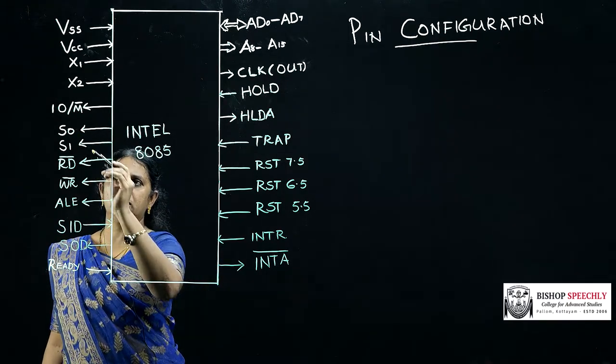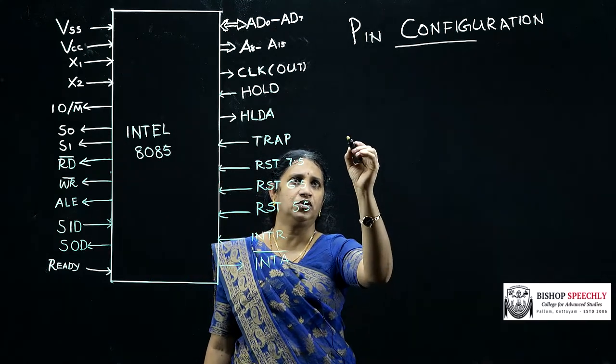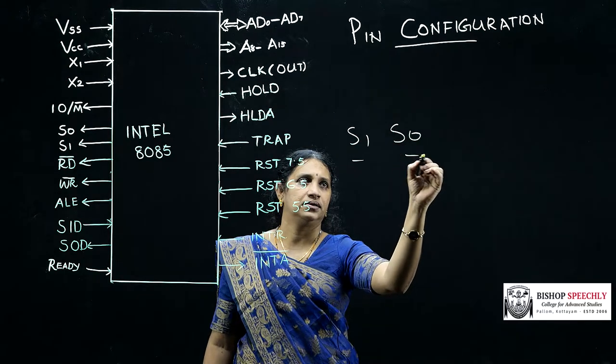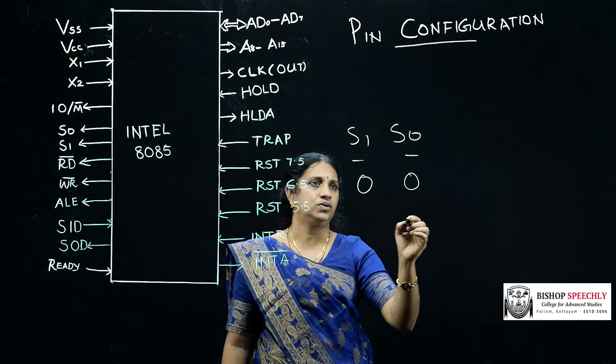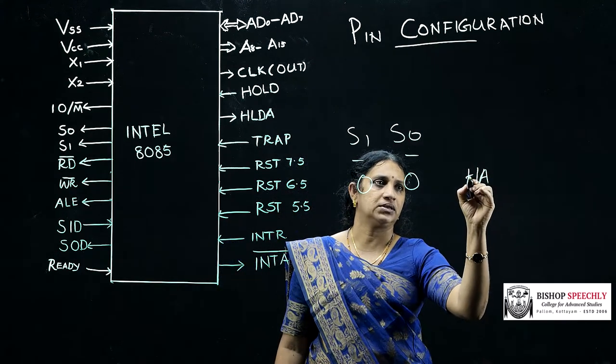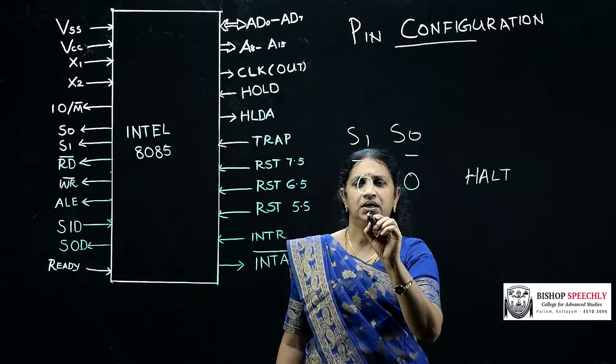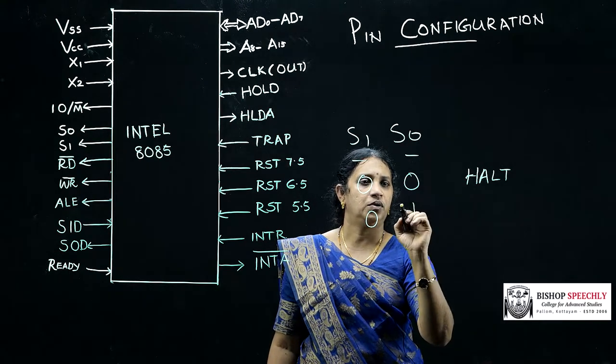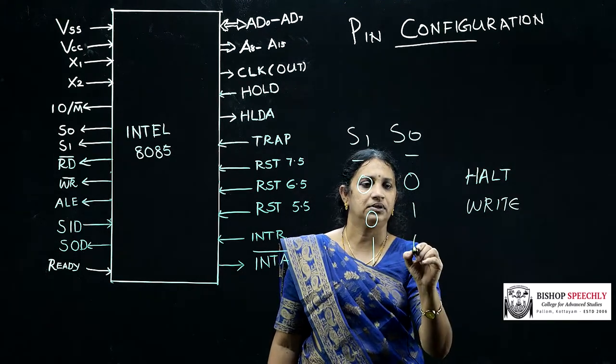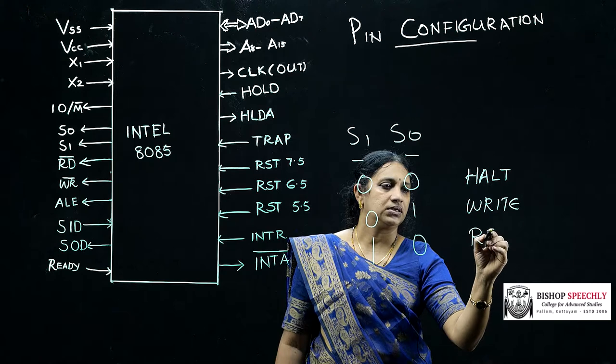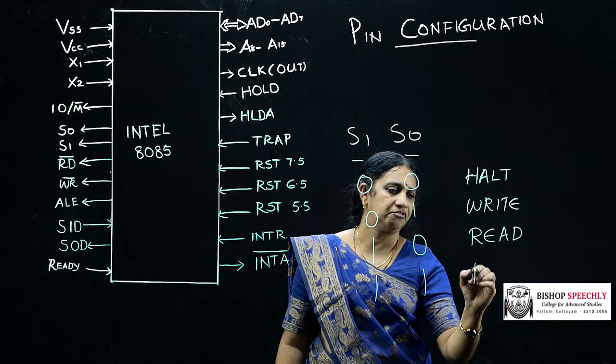The next pins S1 and S0 are status signals. By using these two signals we could represent different operations. Like if two pins have a 0 and 0 value it will indicate a HALT operation, that means the processor will become temporarily stopped. If it has a value of 01 it is used for write operation and if the value is 10 it indicates a read operation and if the values are 11 it indicates a fetch operation.